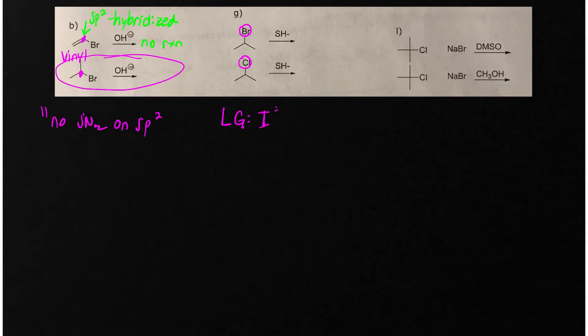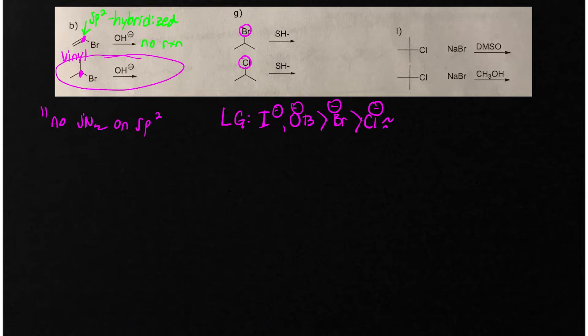In letter G, we have a difference in the leaving group. For leaving groups, iodide and tosylate are about the same, and are better than bromide, which is better than chloride, which is about as good as a neutral water molecule leaving. The better leaving group leaves faster, so that top reaction is going to be faster.